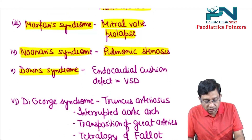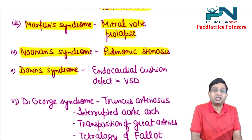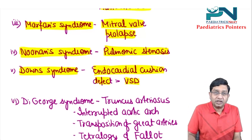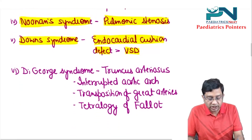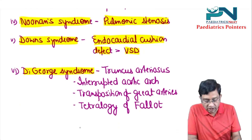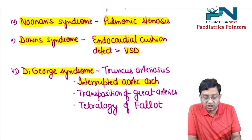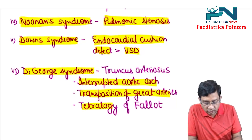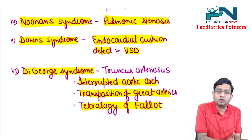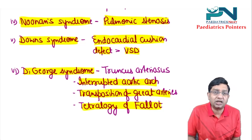In Down syndrome, the most common congenital heart disease is endocardial cushion defect, more common than VSD. In DiGeorge syndrome, you can get truncus arteriosus, interrupted aortic arch, transposition of great arteries (TGA), and tetralogy of Fallot (TOF). These are the syndromes and their associated congenital heart diseases.